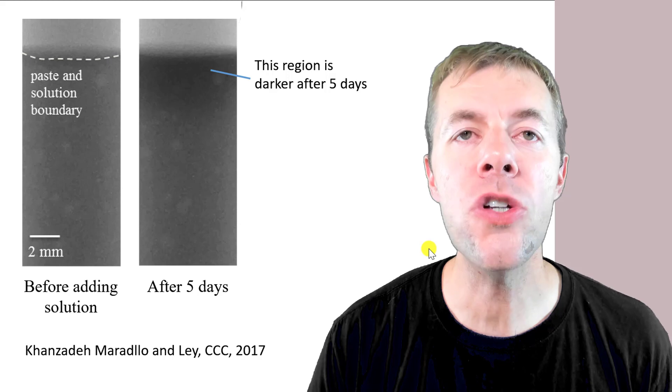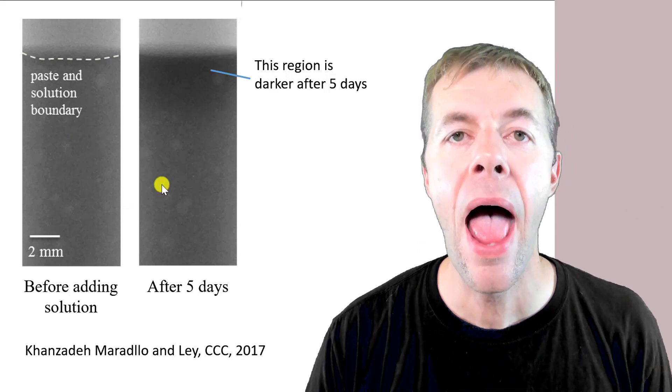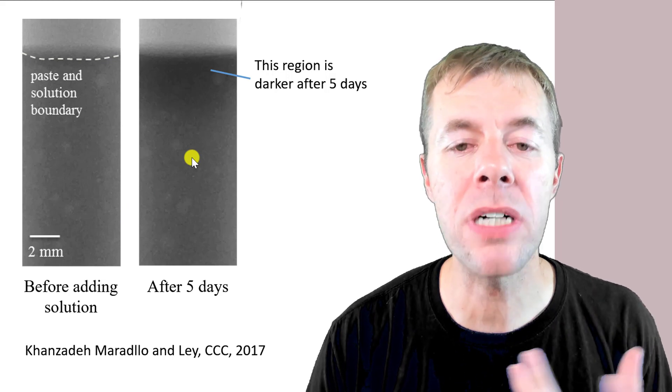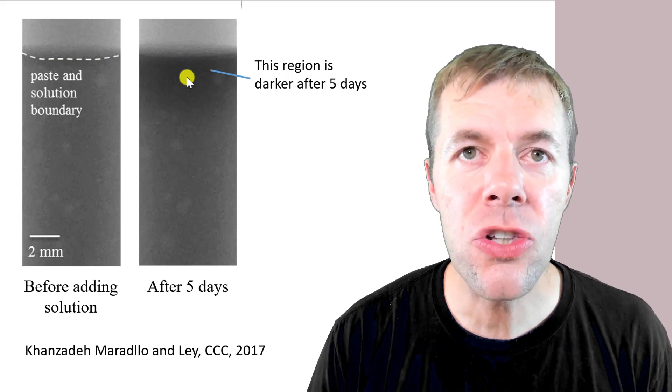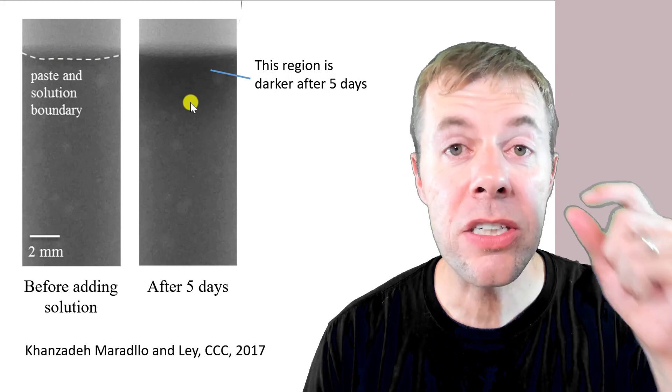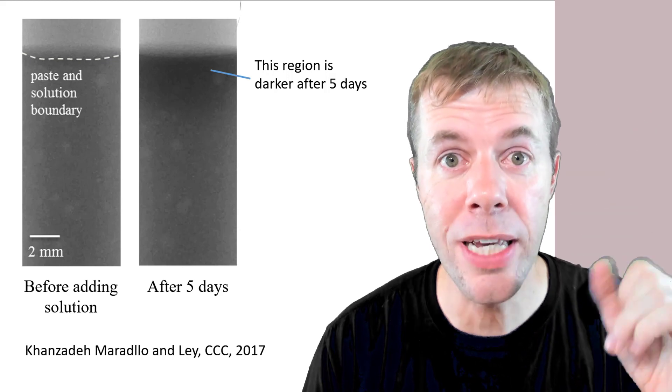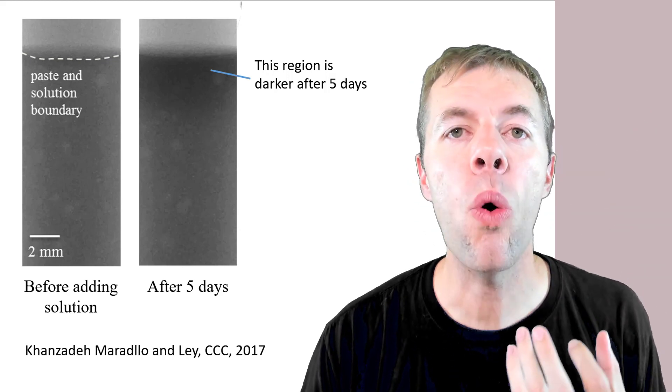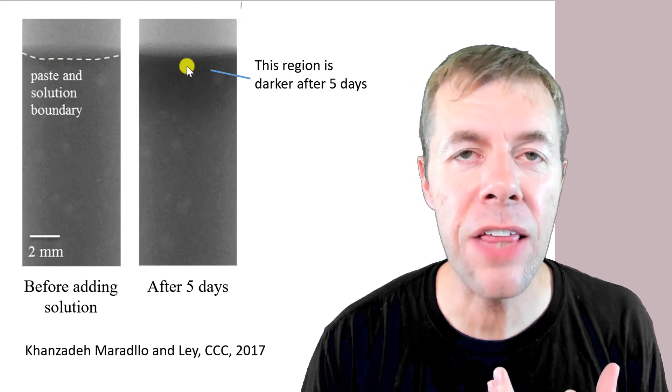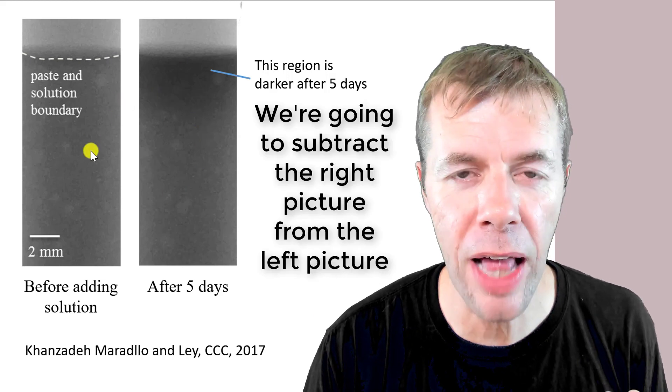So to do this we're going to take a picture before adding any solution. That's on the left. And then after some period of time we're going to take another picture. And we can see this part is a little bit more gray. Why is it gray? Because that tracer shows up as gray. That tracer as it goes in we can see it. So what we're going to do is we're going to take this right image and we're going to subtract it from the left image.